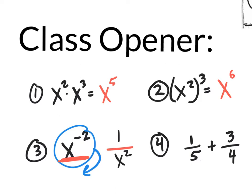To recap: rule 1 — when you're multiplying with the same base, add those exponents. Rule 2 — power to a power, multiply. Rule 3 — when you have a negative exponent, move it to the other side of the fraction and it becomes positive. All of these rules are going to apply in today's section. The only difference is, instead of regular integers like 2 and 3, you're going to have fractions as exponents.